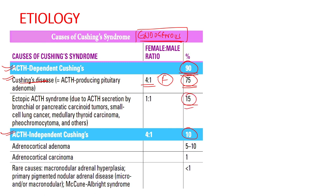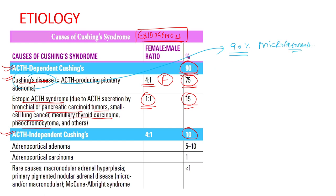Fifteen percent of all cases are due to ectopic ACTH syndrome. Tumors that can produce ectopic ACTH include bronchial or pancreatic carcinoid tumors, small cell carcinoma of the lung, medullary thyroid carcinoma, pheochromocytoma, and certain other rare tumors. The female-to-male ratio is equal for ectopic ACTH. Importantly, 90 percent of ACTH-producing pituitary adenomas are microadenomas (a few millimeters in size), and 10 percent are macroadenomas (greater than 1 cm).